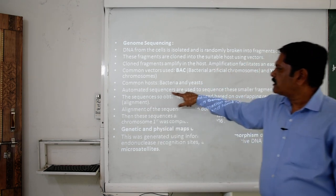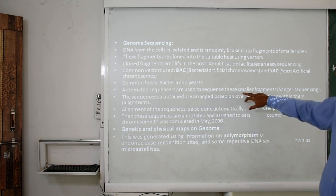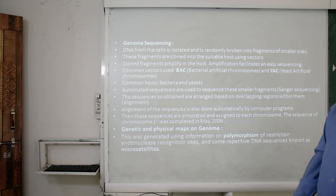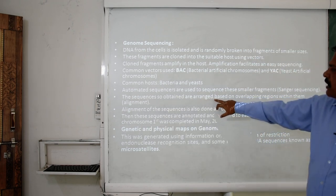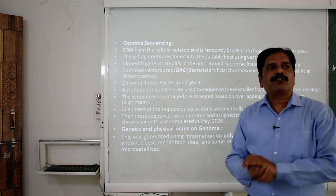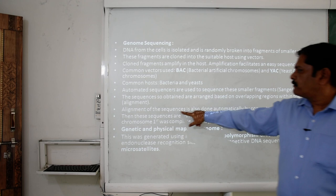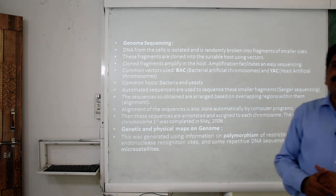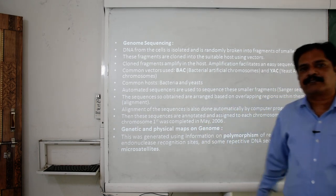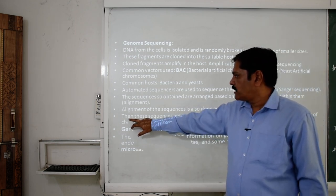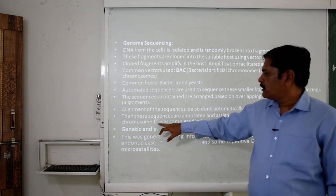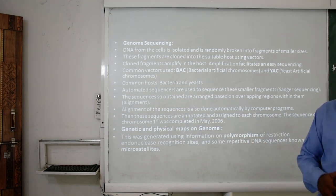Automated sequencers are used to sequence these smaller fragments — this is called Sanger sequencing. The sequences obtained are arranged based on overlapping regions, a process called alignment, which is done automatically by computer programs. Finally, these sequences are annotated and assigned to each chromosome. The sequencing of chromosome 1 was first completed in May 2006.